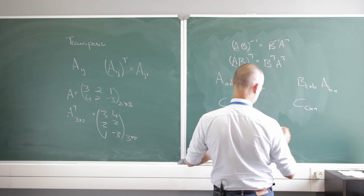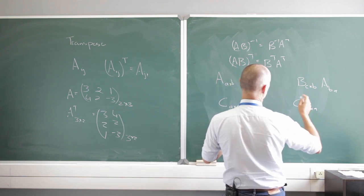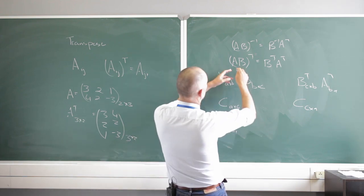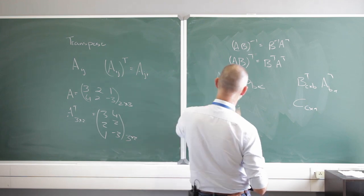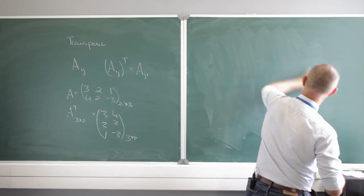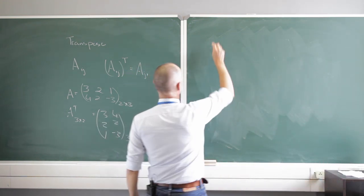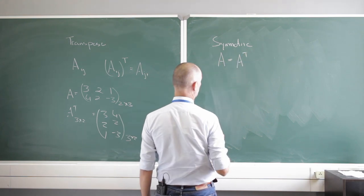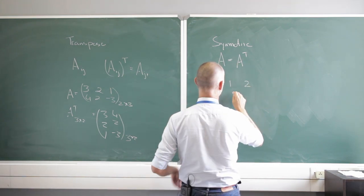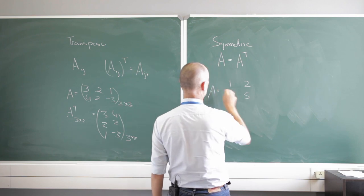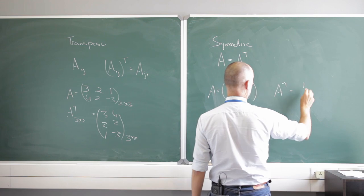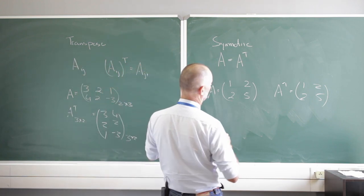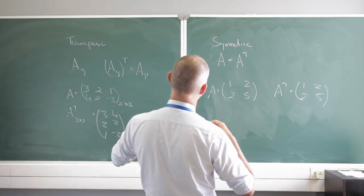So please remember: (AB)^T = B^T times A^T. Now something that naturally follows from this is symmetric matrices. A symmetric matrix is one where the matrix is directly equal to its transpose: A = A^T. For example, the matrix [1, 2; 2, 5] — its transpose is also [1, 2; 2, 5], exactly the same thing. Those are referred to as symmetric matrices.